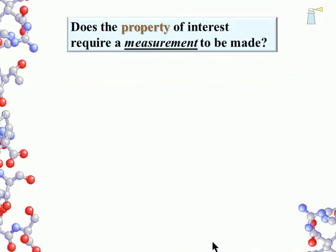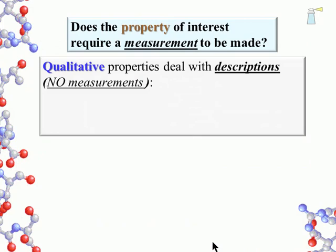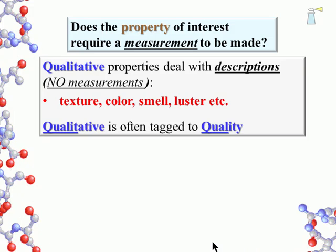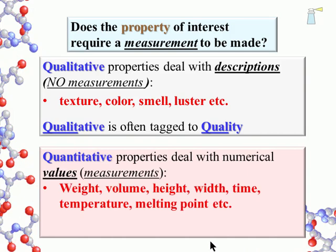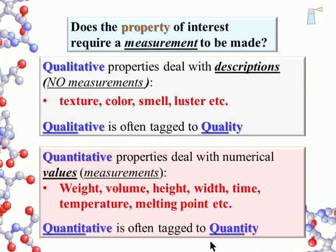The first distinction involves measurement. Qualitative properties deal with descriptions of matter and do not require measurements. Properties such as texture, color, smell, and luster fall into this group — luster refers to the shininess of metals. Qualitative is often tagged to quality; both terms begin with 'qual.' Quantitative properties deal with numerical values from measurements. Examples of quantitative include weight, volume, height, width, time, temperature, and melting point — each of these properties require some sort of measurement. Quantitative is often tagged to quantity; both terms begin with 'quant.'